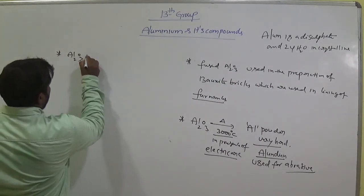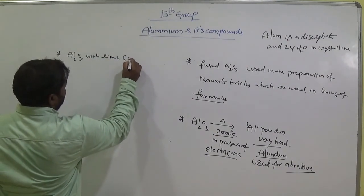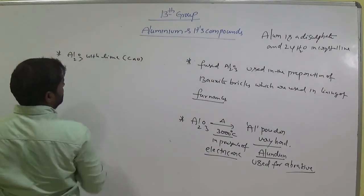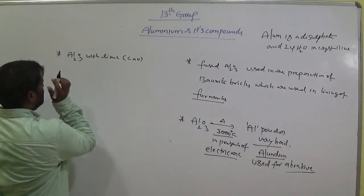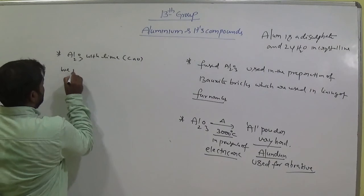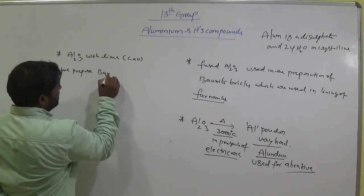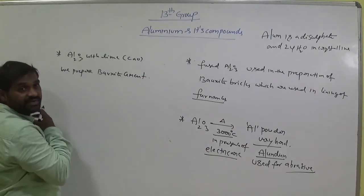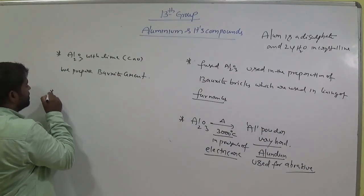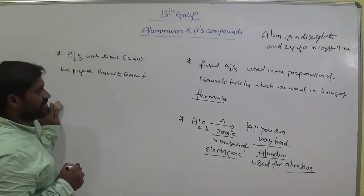Al₂O₃ with lime, lime means CaO, calcium oxide, lime, quick lime qualities. With lime, we prepare bauxite cement. These are the important uses of Aluminium.